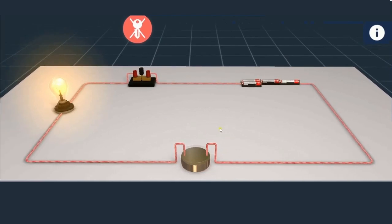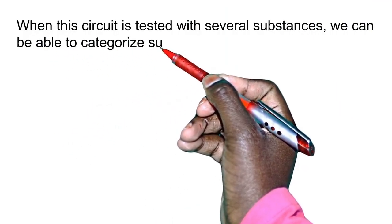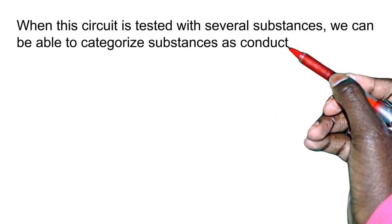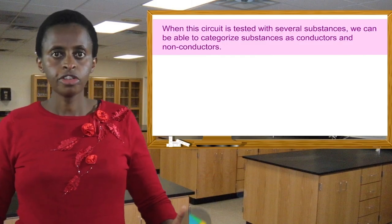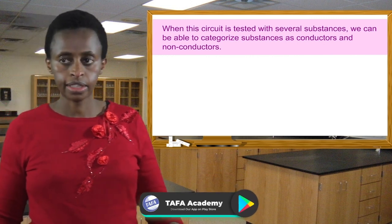So when the circuit is tested with several substances, we can be able to categorize substances as conductors and non-conductors.